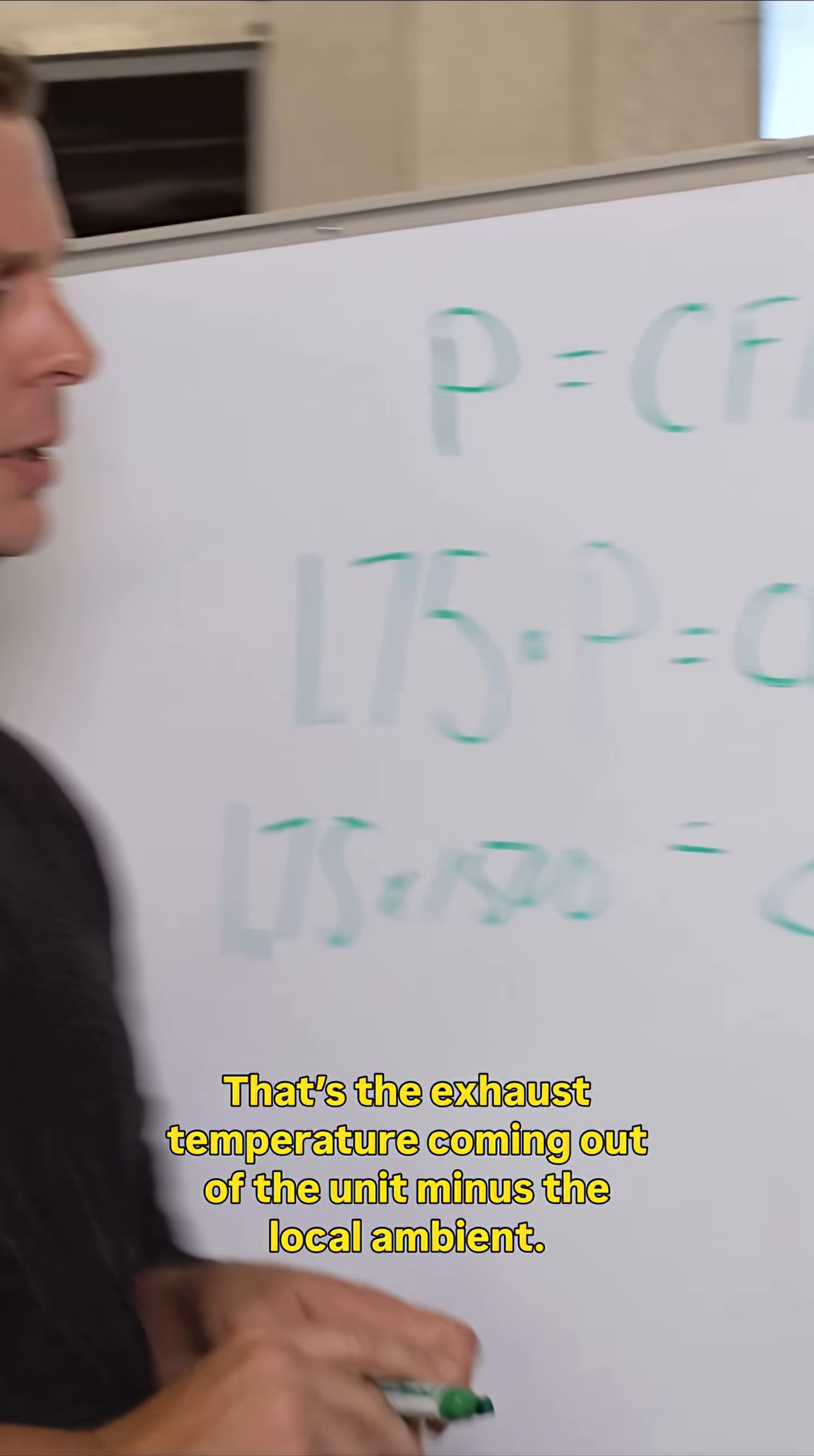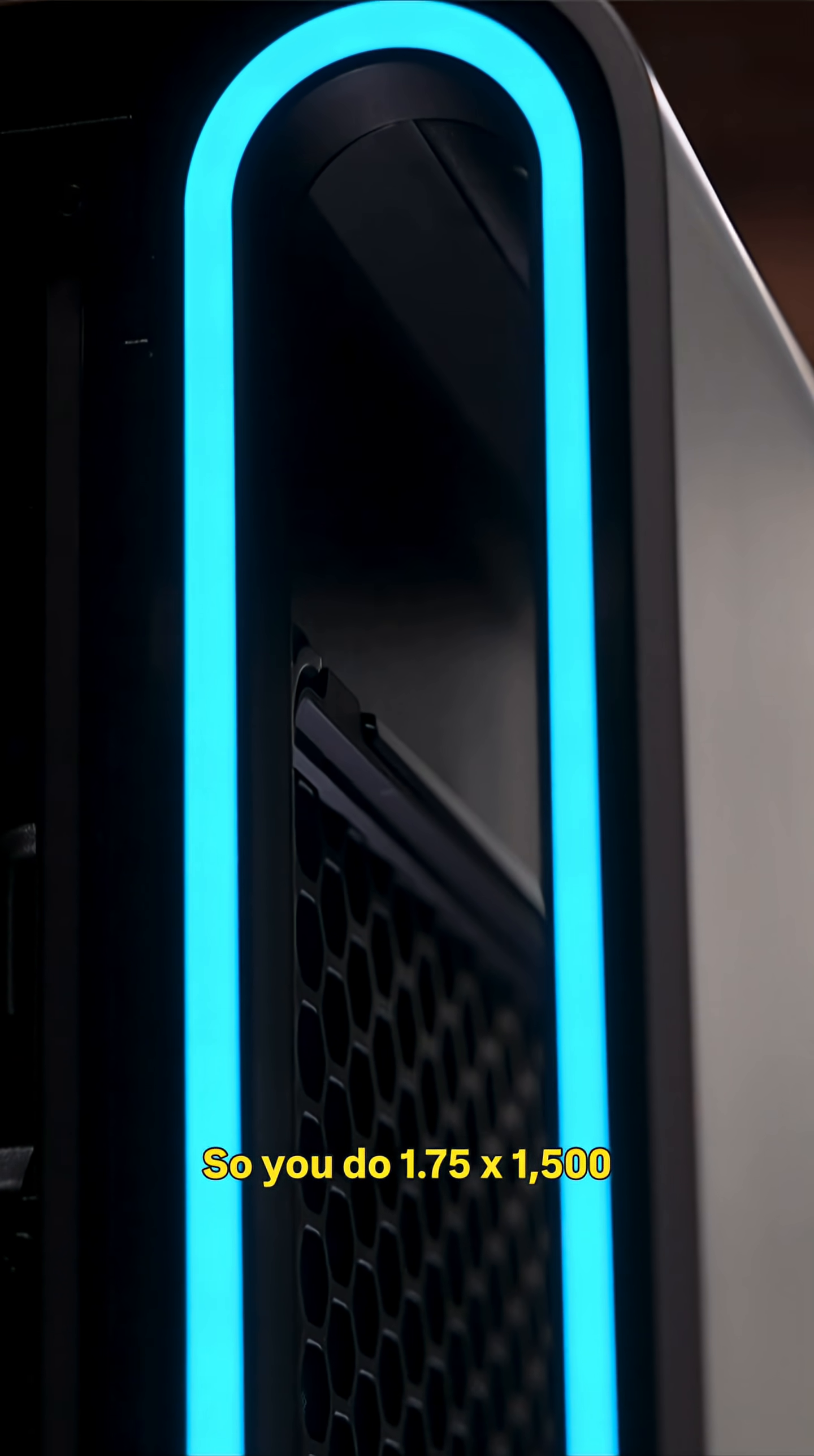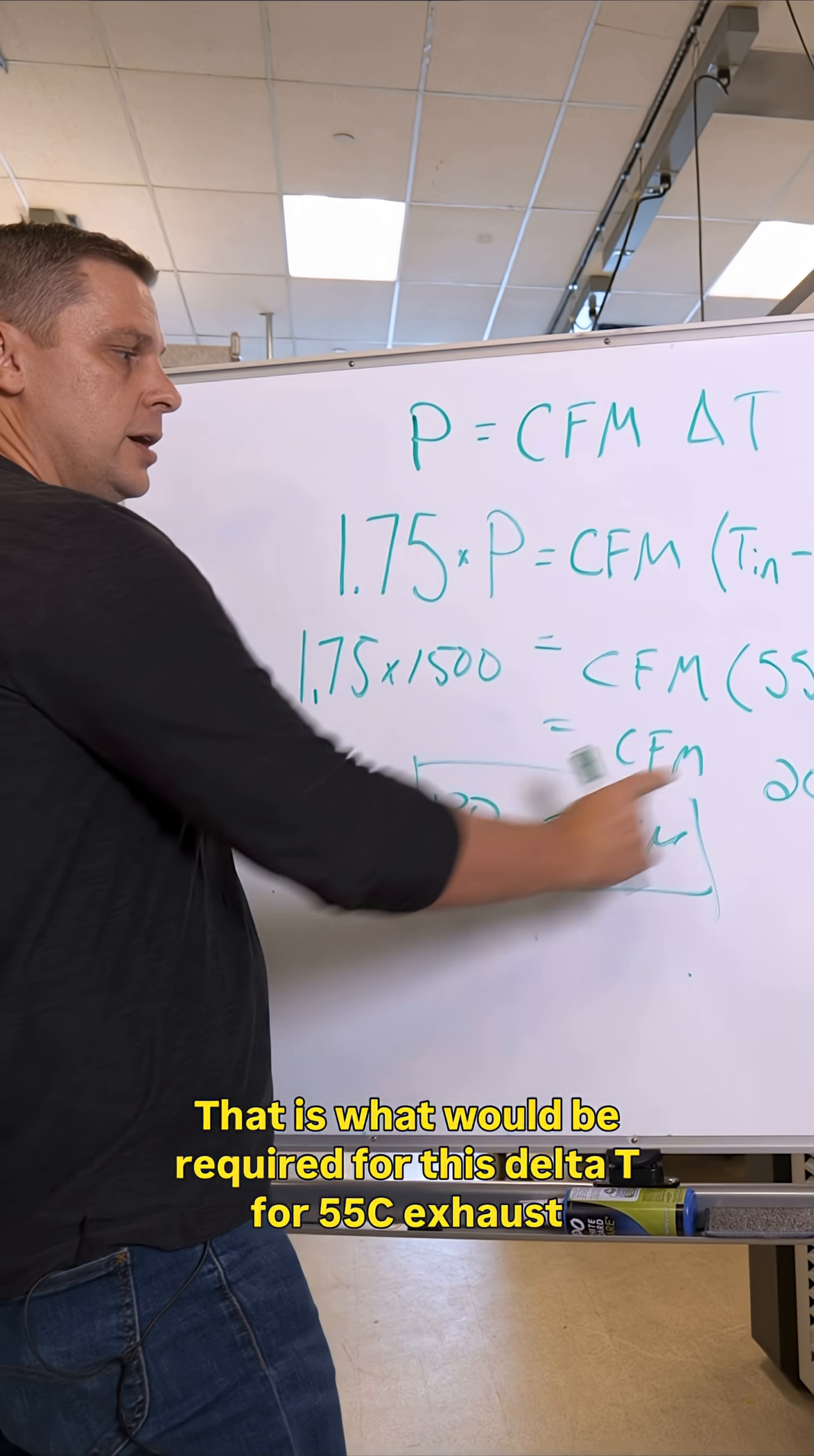We typically design at 35°C, so you do 1.75 times 1500 divided by 20—that's 130 CFM. So that is what would be required for this delta T, for 55°C exhaust. You would need 130 CFM minimum.